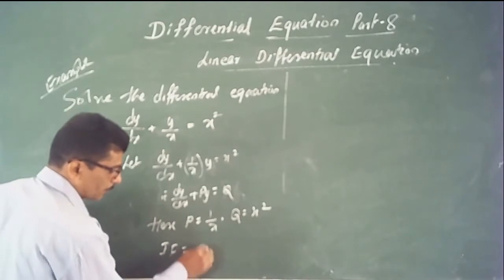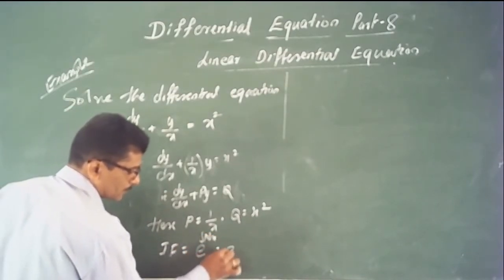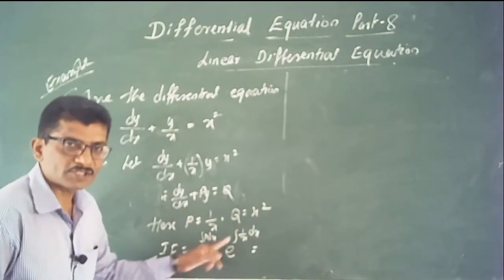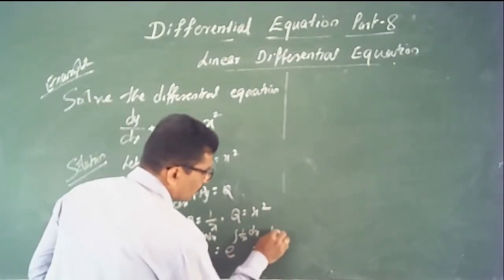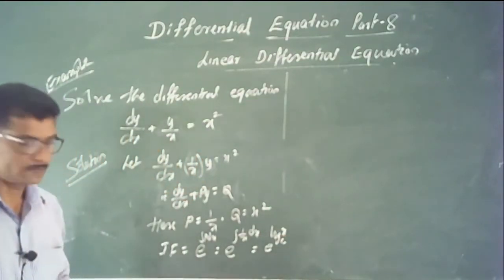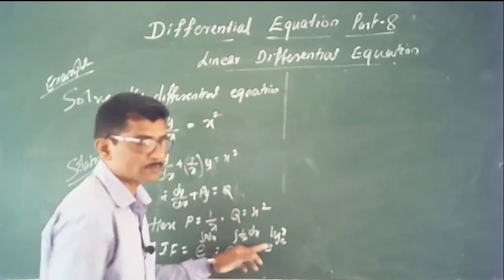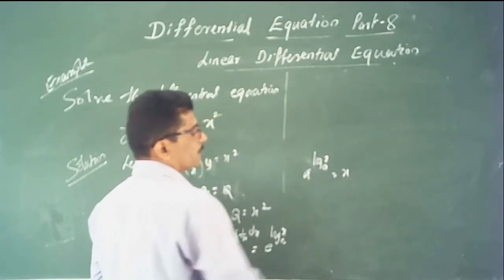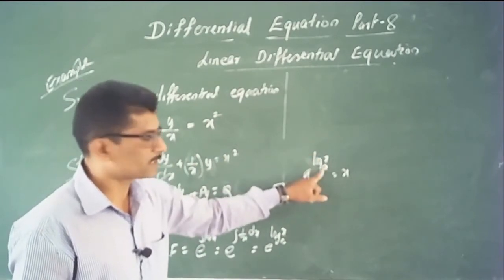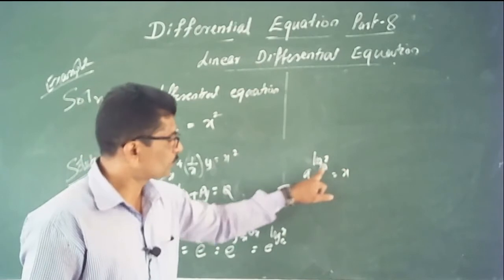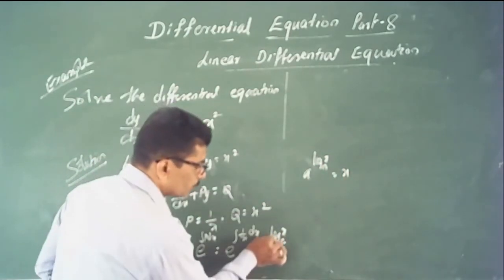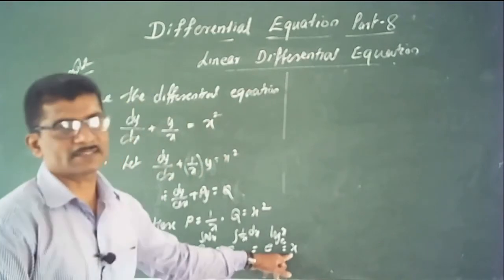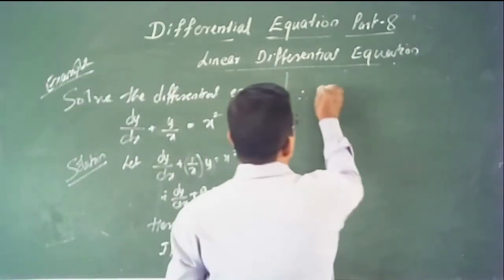Next, find the integrating factor: I.F. = e^(∫P dx) = e^(∫(1/x) dx). The integration of 1/x with respect to x is log|x|. Using the definition of logarithms, e^(log x base e) = x. Therefore the integrating factor is x.